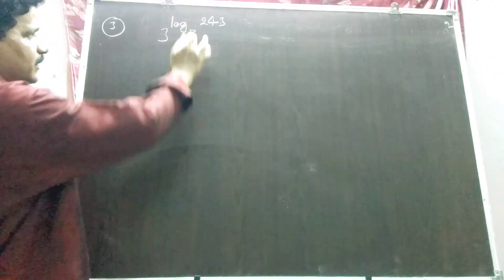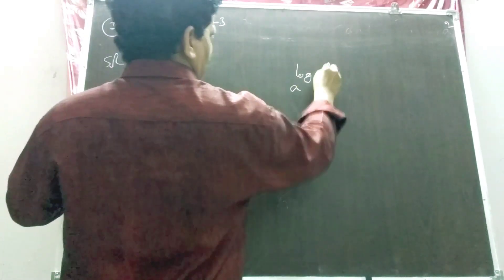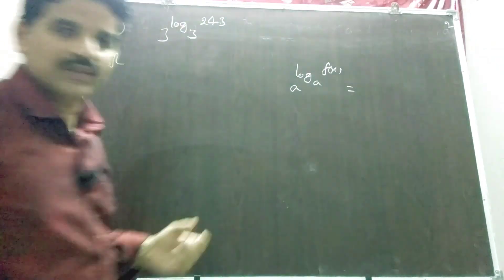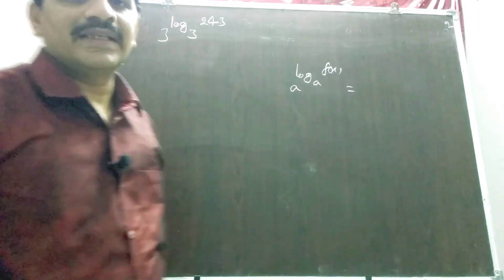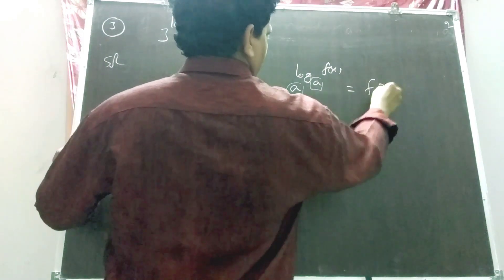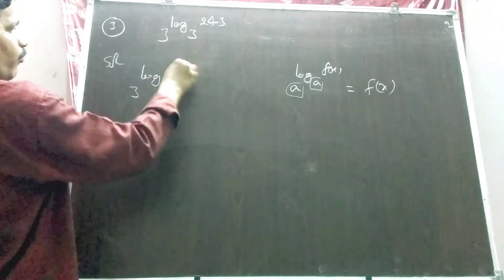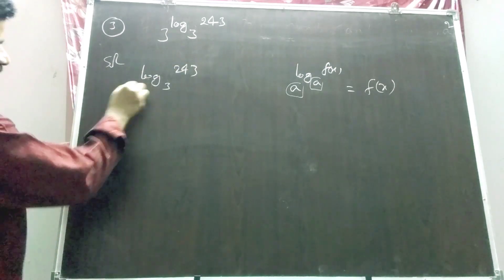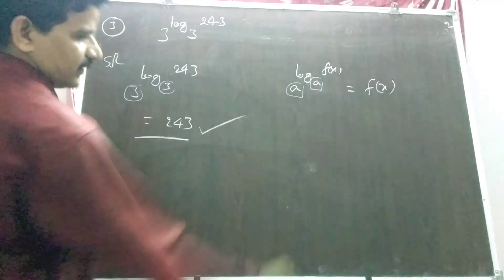Question 3: find 3^(log₃243). There are two bases here — the main base is 3 and the log base is also 3. The important formula is: a^(log_a(f(x))) = f(x). Whenever both bases are equal, the value equals f(x). Therefore 3^(log₃243) = 243 is the right answer.